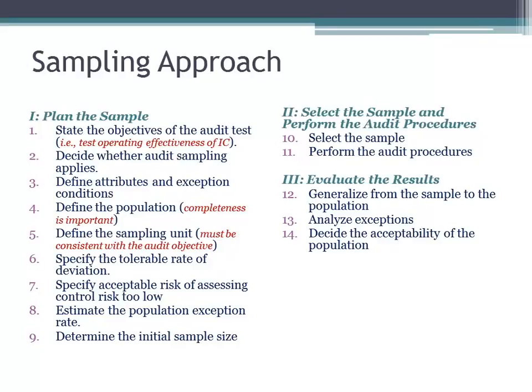Specify your tolerable rate of deviation. You have to decide — and this is where sampling involves judgment on the auditor's part — how much deviation you're willing to accept. What's your acceptable rate of exceptions? If you're satisfied that 95% of the transactions are being recorded in accordance with the firm's control policies, that means you're willing to accept 5%. Your tolerable rate of deviation is 5%, and you're willing to accept that in your sampling.